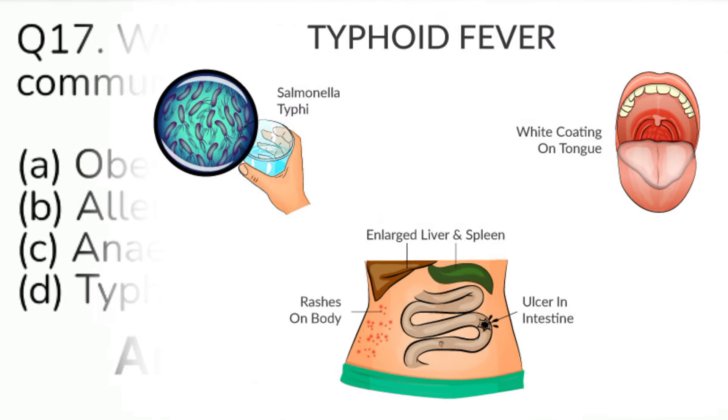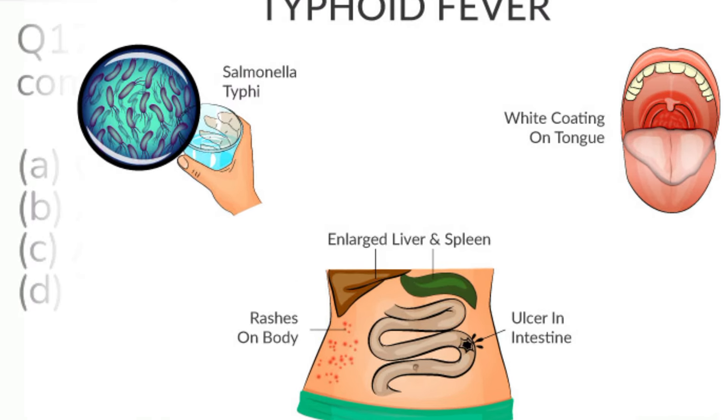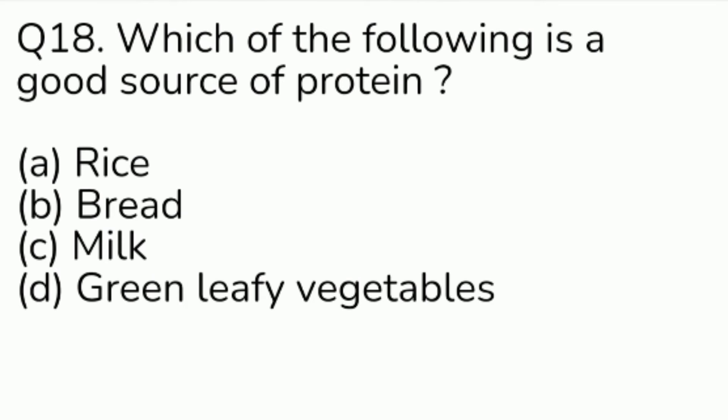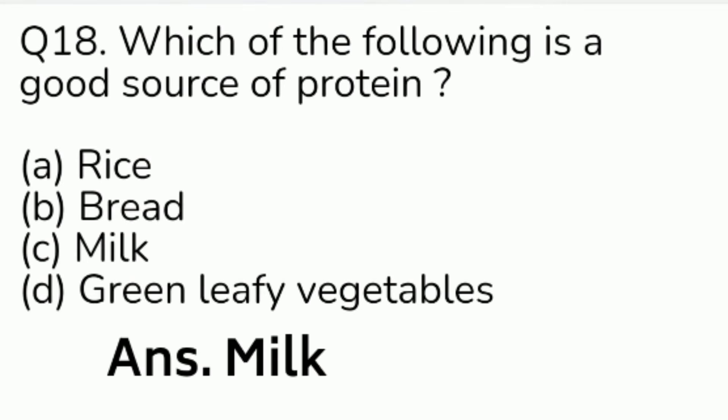Question number 18. Which of the following is a good source of protein? Option A: rice. Option B: bread. Option C: milk. Option D: green leafy vegetables. Answer is Option C, milk.